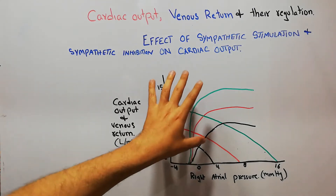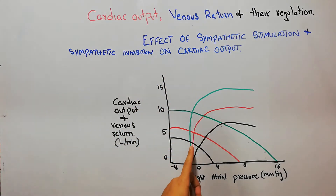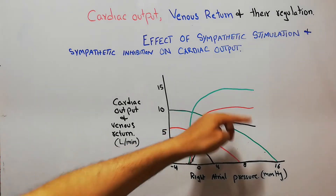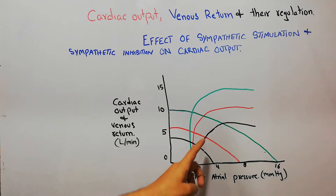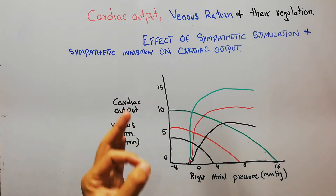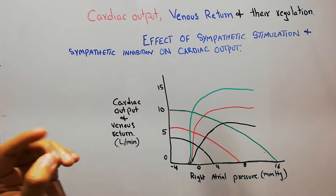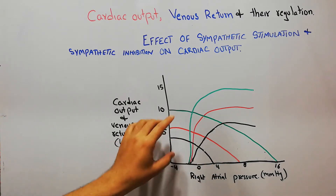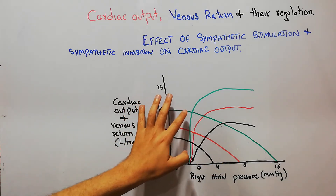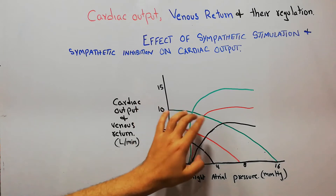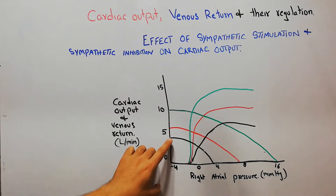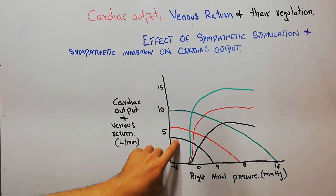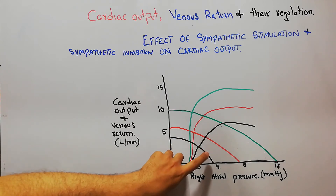In this diagram we have plotted the normal cardiac output, the cardiac output when sympathetic stimulation occurs, and the cardiac output when the sympathetic system is inhibited. Similarly, we have also plotted the venous return under normal conditions, when the sympathetic nervous system is stimulated, and when the sympathetic system has been inhibited.